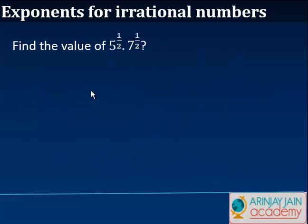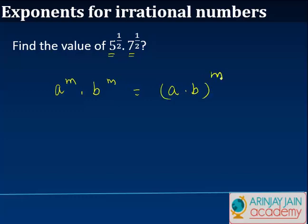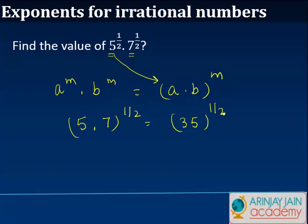Let's look at a third example. In this case, if I equate this with something like a to the power m times b to the power m — because we have 5 to the power 1 by 2 and 7 to the power 1 by 2 — we know a to the power m multiplied by b to the power m can be written as a into b to the power m. In this particular case, a is equal to 5, b is equal to 7, and the exponent is 1 by 2. So the answer is 35 to the power 1 by 2, which is nothing but the square root of 35.